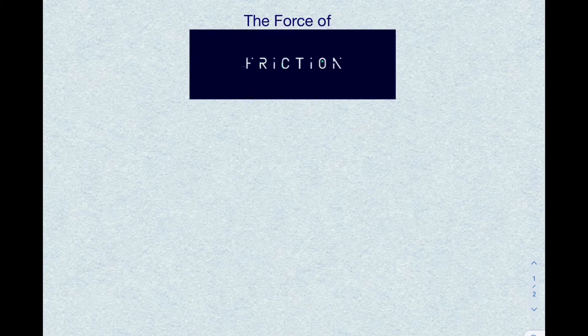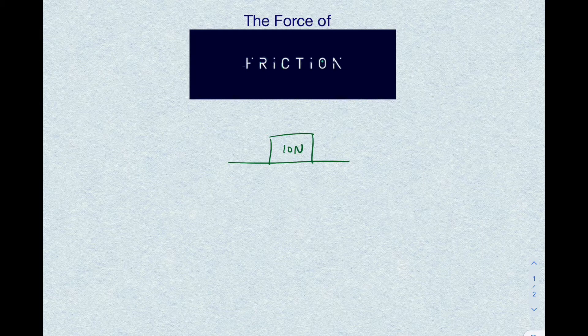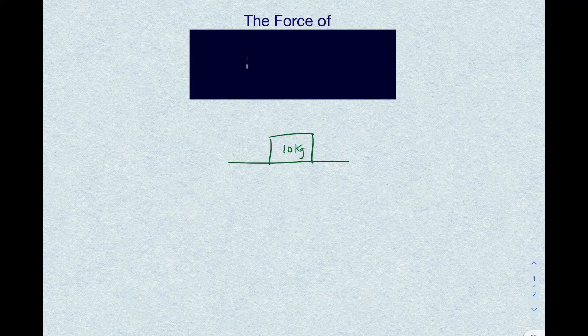This video is about the force of friction. We're still talking about blocks on planes. An important differentiation: if a value is given in kilograms, it's the mass; if it's given in newtons, it's the weight. For right now, I'm going to use kilograms.